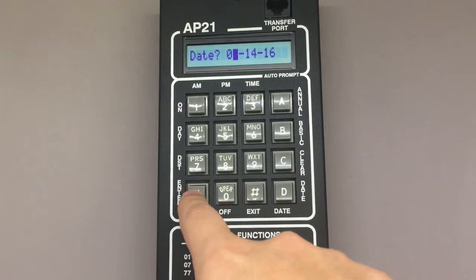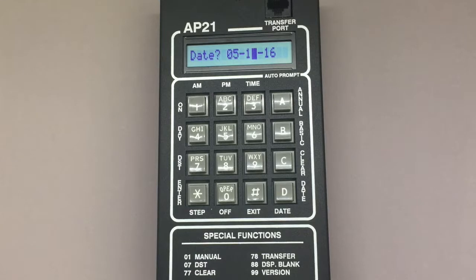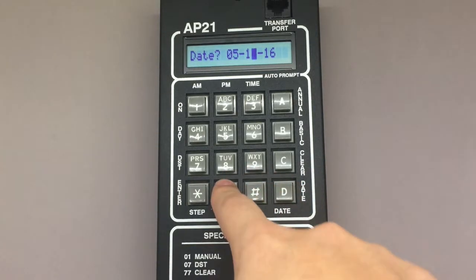Press star to advance to the date input. Here you'll use the keypad again to input the number date, and once again you'll use a zero before single digits. Since it's the 8th, I'm going to press 08.